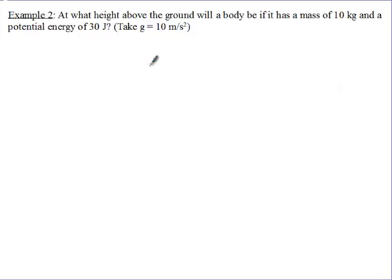In example 2, the question reads: at what height above the ground will a body be if it has a mass of 10 kg and a potential energy of 30 joules?